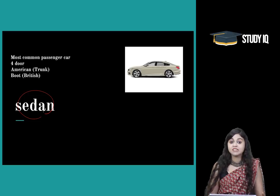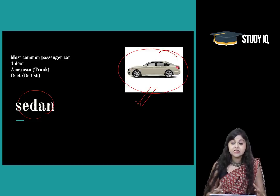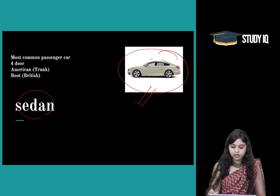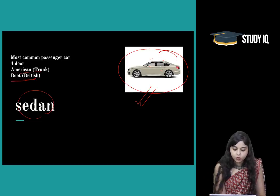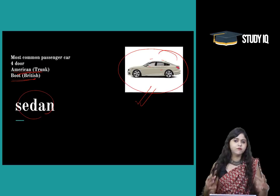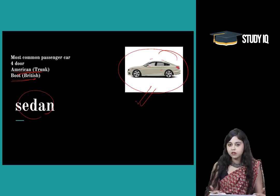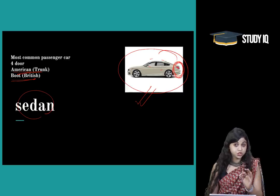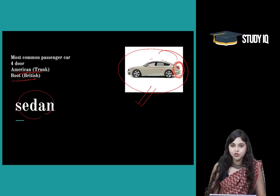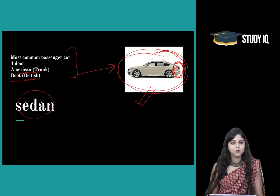Starting with the first car category: Sedan. Sedan is a very common passenger car. As we can see in the image, this is an example of a sedan. Sedan is a four-door car. When we talk about the boot space or trunk space — boot is a British word and trunk is American — we keep luggage in either the boot space in British English or the trunk in US or American English.